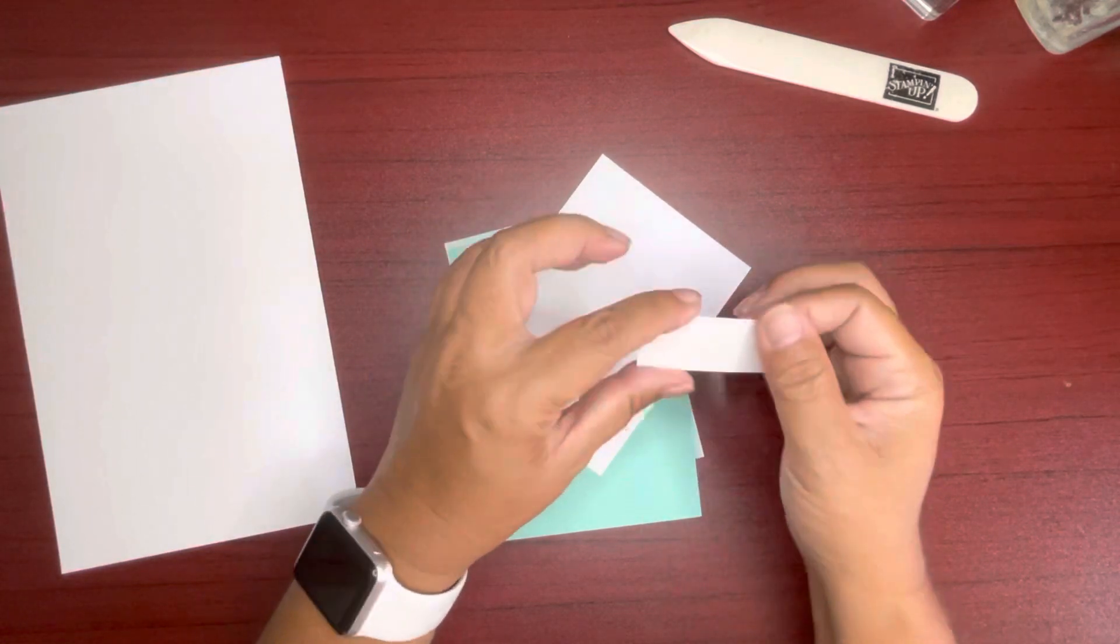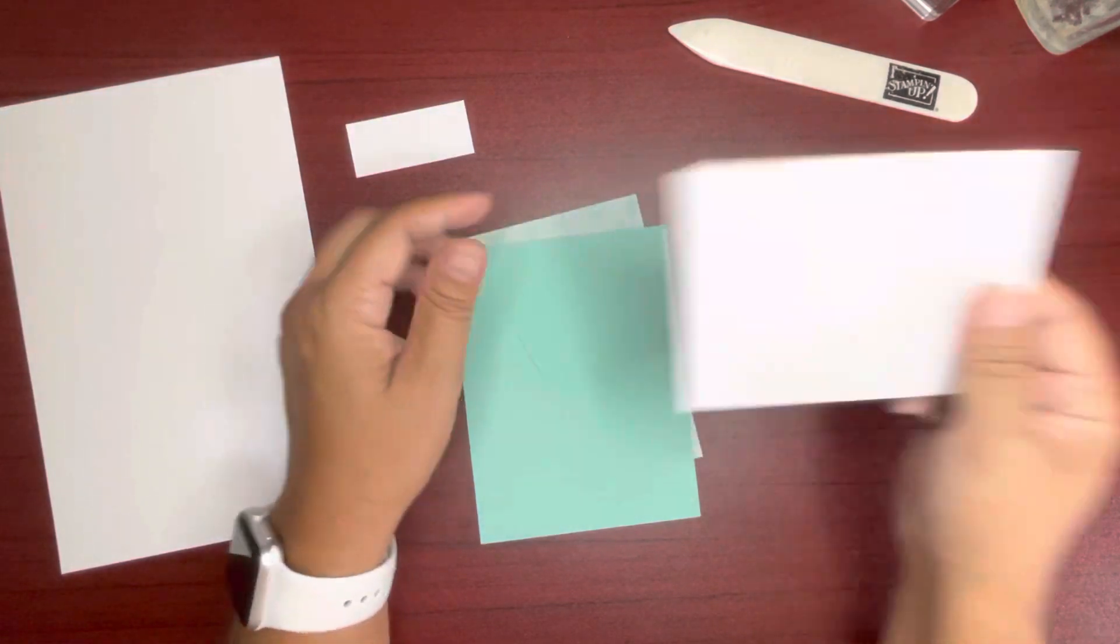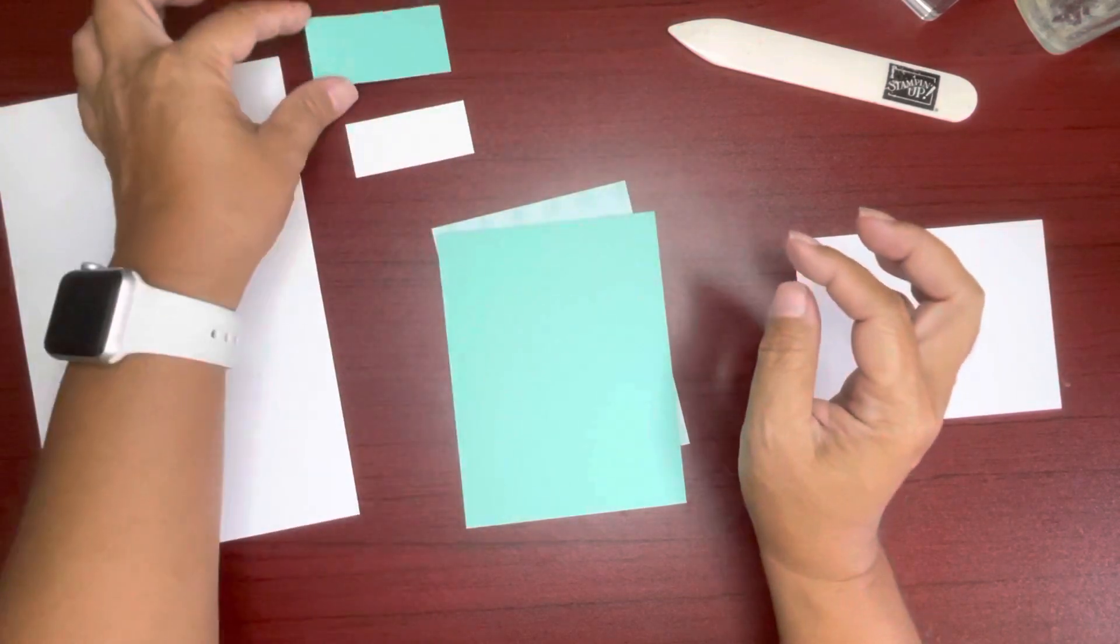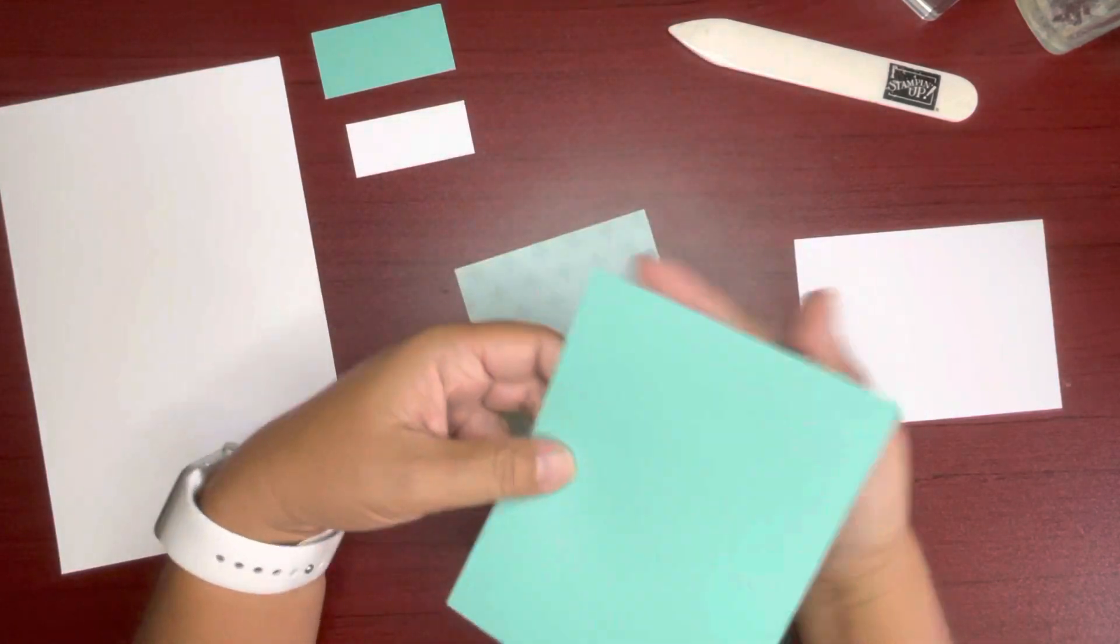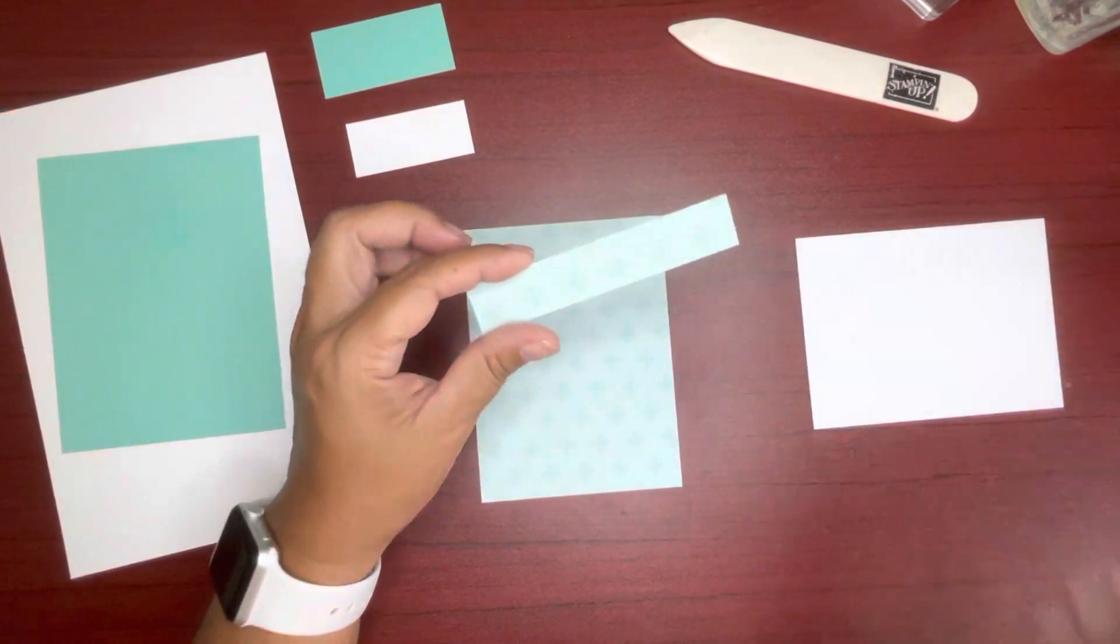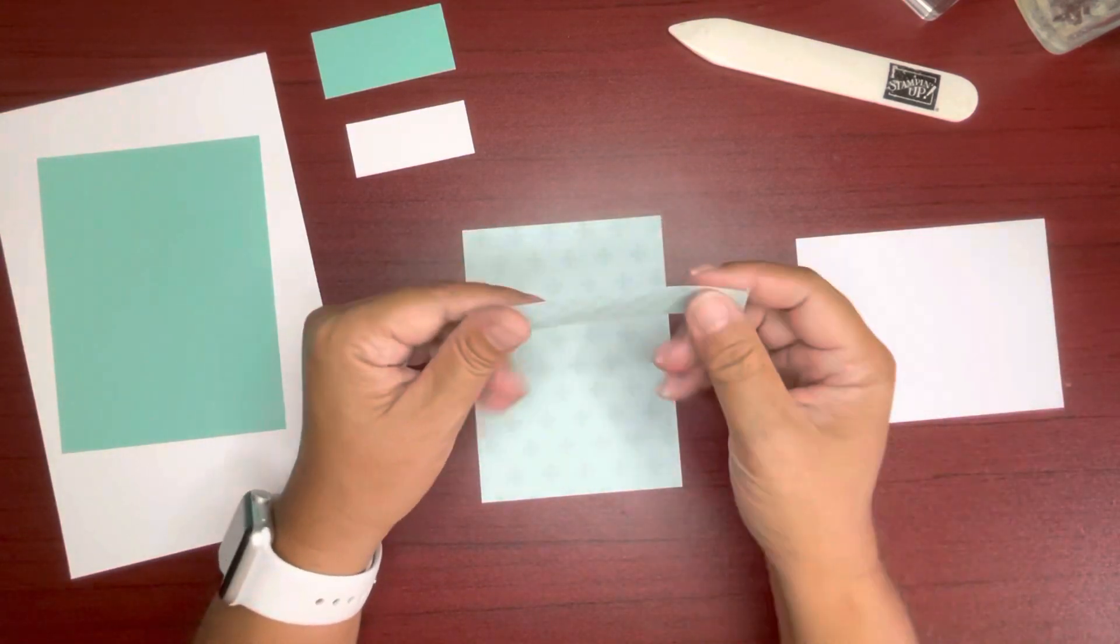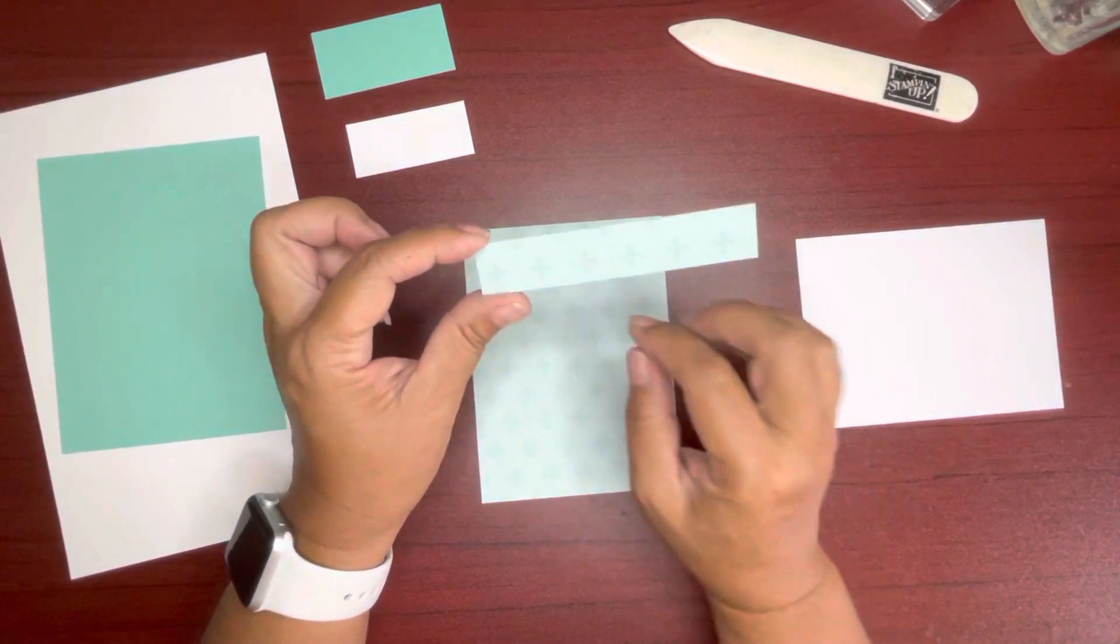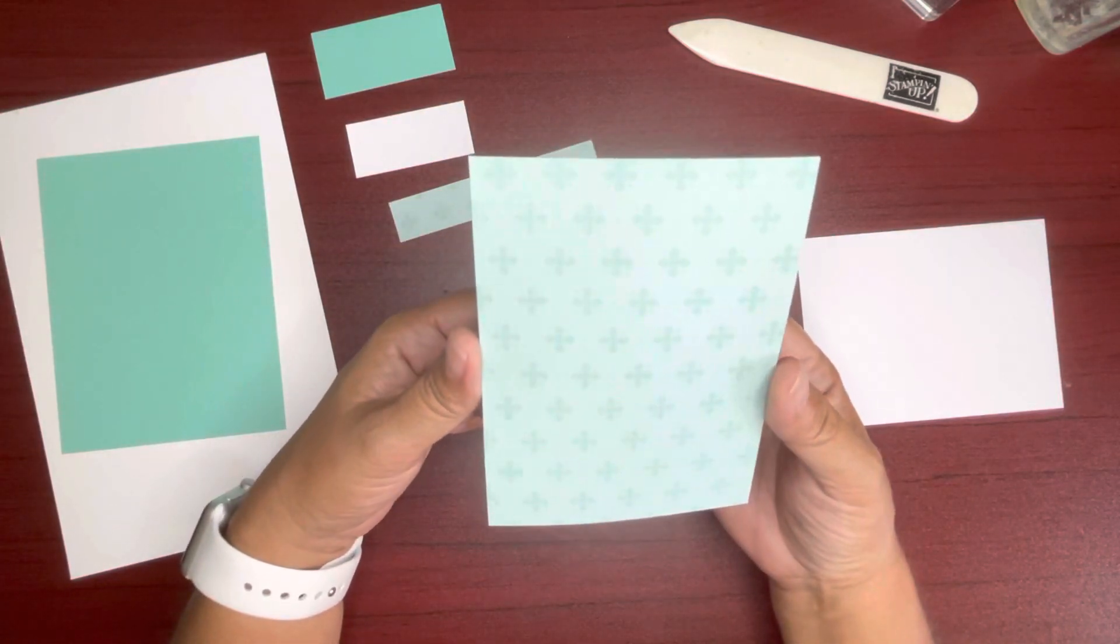I have another white piece of cardstock cut 1 inch x 2 1/4 and a scrap for punching. Coastal Cabana cardstock cut at 1 1/4 x 2 1/2 for layering. And this one here is cut at 4 1/8 x 5 3/8. And a designer series paper from the Subtles designer series 6 x 6 stack, Coastal Cabana. This one here is 3 1/4 x 4 inch. And this one here is 3 3/4 x 5 inches.